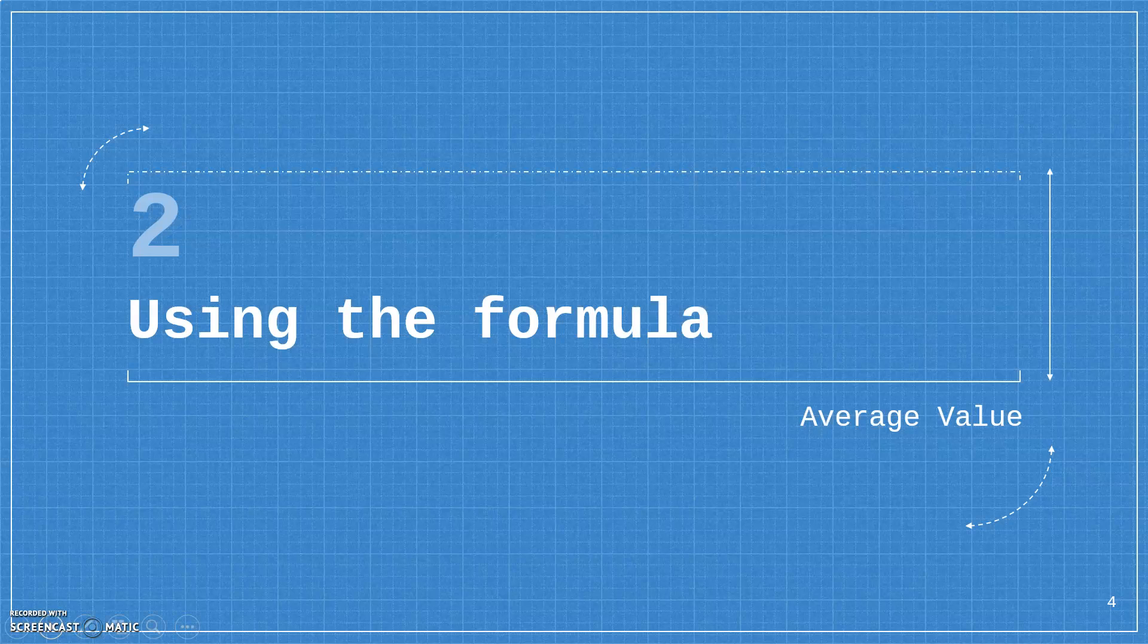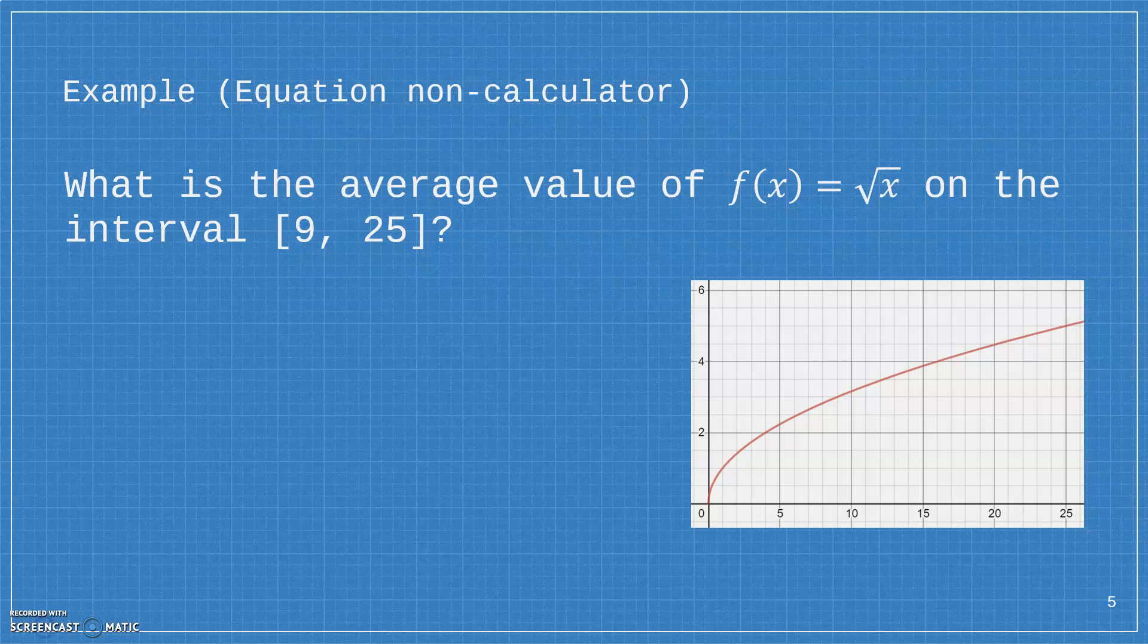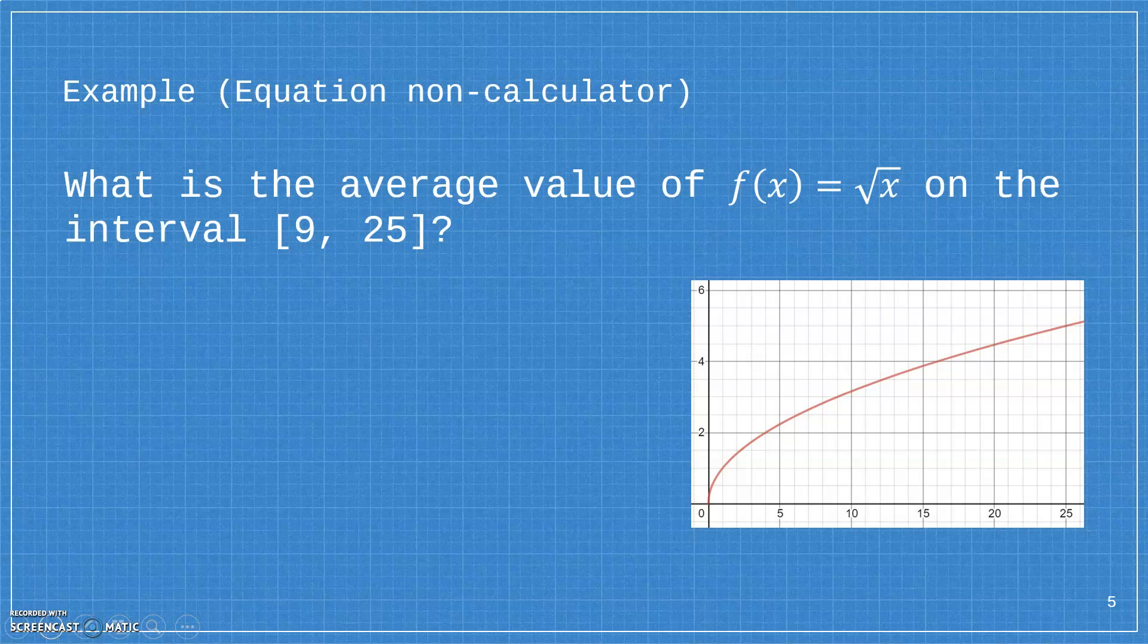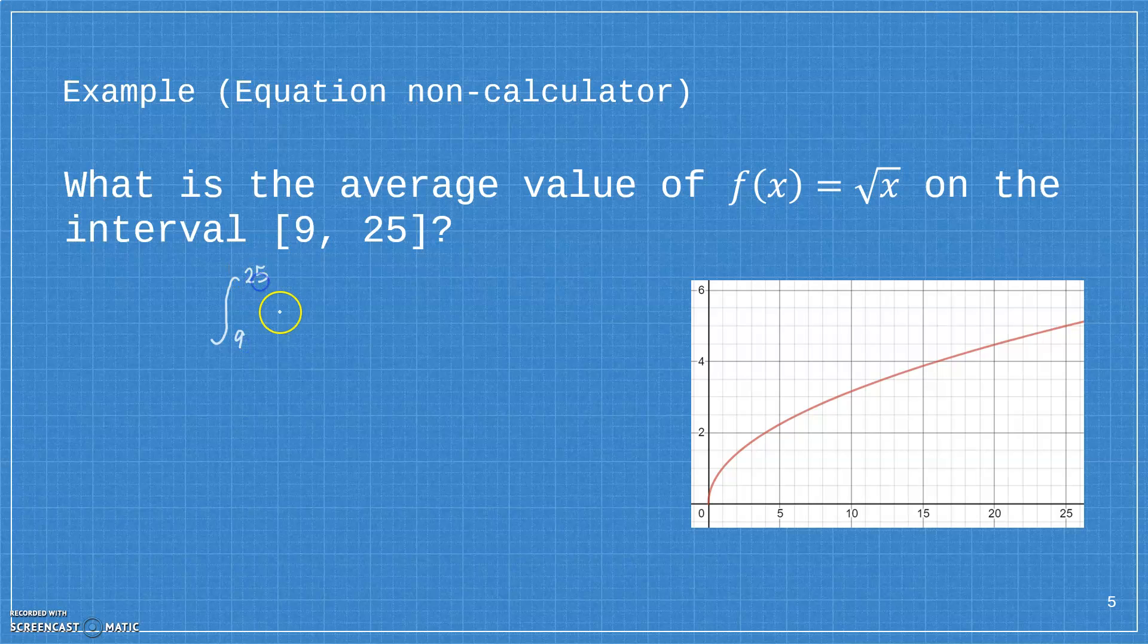So the way we use the average value formula is lots of different ways, but one way is we might be given an equation and no calculator. What is the average value of the square root function on the interval from 9 to 25? So then we would need to take the integral from 9 to 25 of the square root of x dx, and we're going to divide that by 25 minus 9, which is 16.